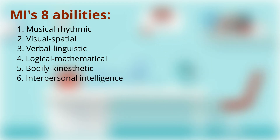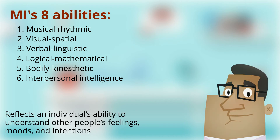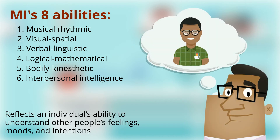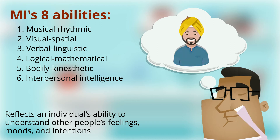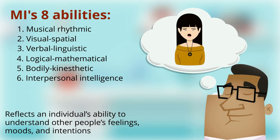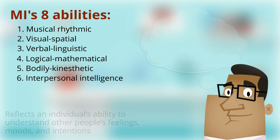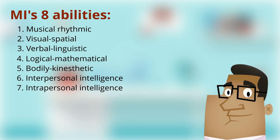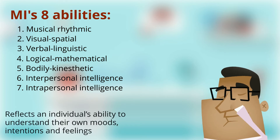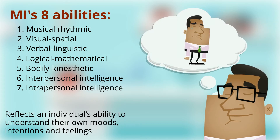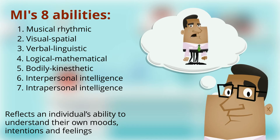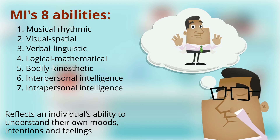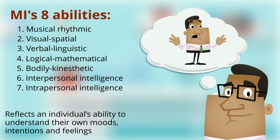The sixth is Interpersonal intelligence, which reflects an individual's ability to understand other people's feelings, moods, and intentions. The seventh is Intrapersonal intelligence, which reflects an individual's ability to understand their own moods, intentions, and feelings.